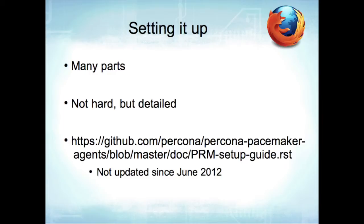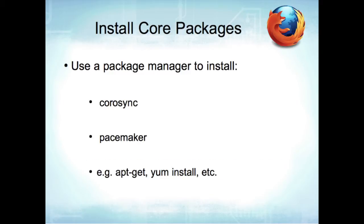The first thing you want to do is install your core packages — Corosync and Pacemaker. Just use whatever your favorite package manager is, whether it's apt-get or yum: 'yum install pacemaker corosync' or 'apt-get install pacemaker corosync'. These are all local to the node itself. There's no centralized administrative server — all the nodes talk to each other, so there's no single point of failure there.